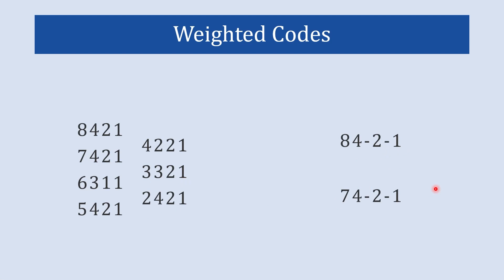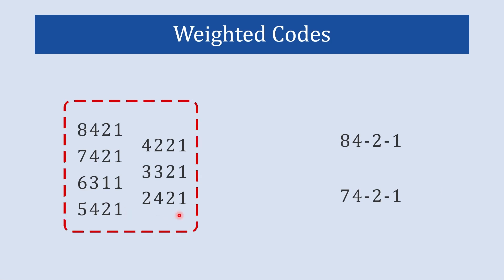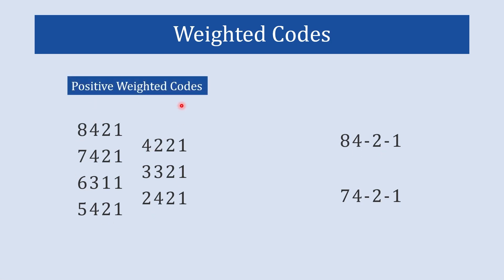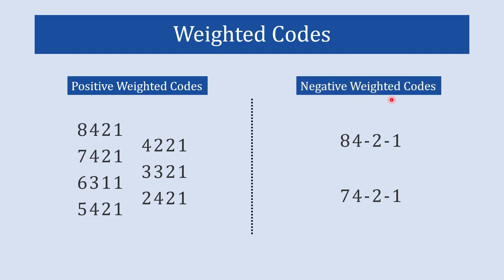You can spot a difference among all these codes. Some codes have positive weight on each and every position — those are known as positive weighted codes. Whereas several positions of other codes have some negative weight, and those are known as negative weighted codes.